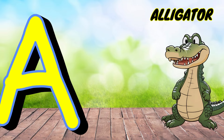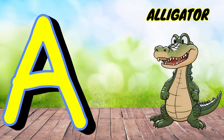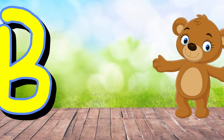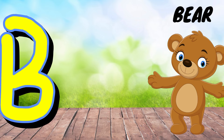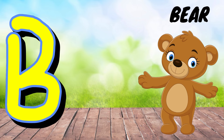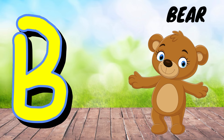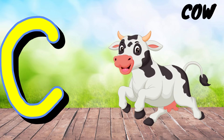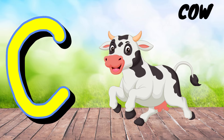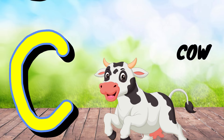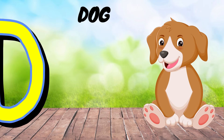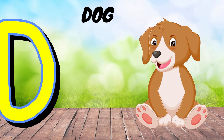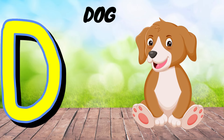A is for Alligator. A, A, Alligator. B is for Bear. B, B, Bear. C is for Cow. C, C, Cow. D is for Dog. D, D, Dog.